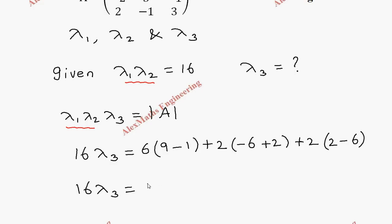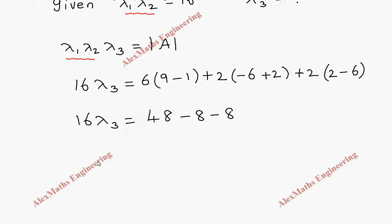This is minus 4 minus 8, again this is minus 4 and minus 8, so we have to subtract 16. So 16 lambda 3: 48 minus 16, so 16 lambda 3 equals 32.